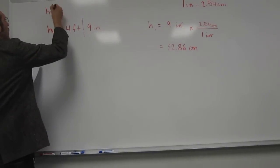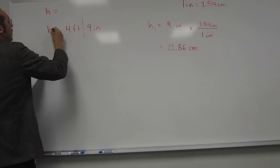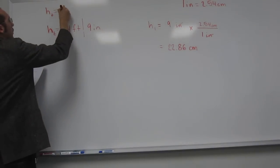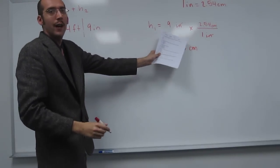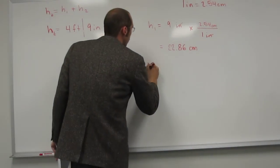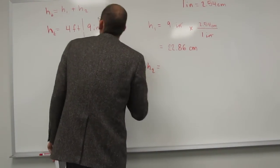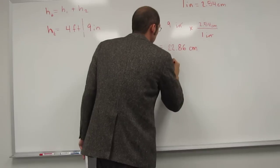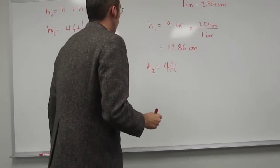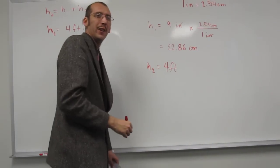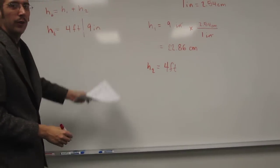So if you think about what we're doing, we're saying H total equals H1 plus H2, right? H1 is 9 inches. H2 is going to be 4 feet. H1 and H2. Do you see what I'm doing? Kind of totaling it?